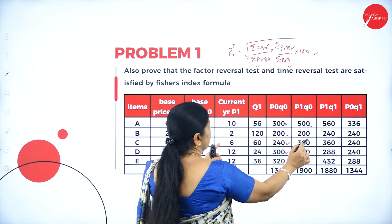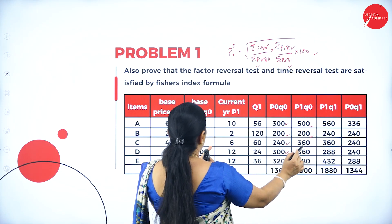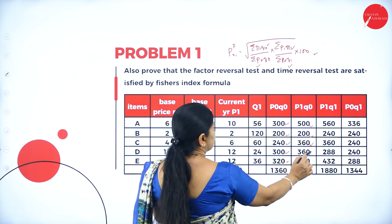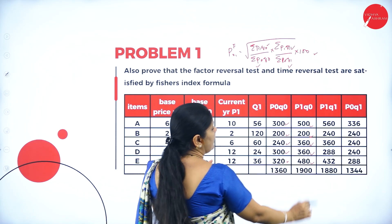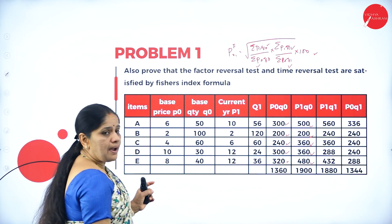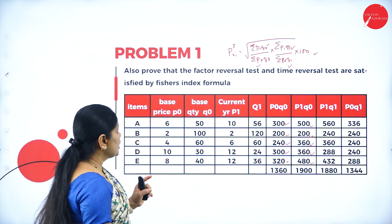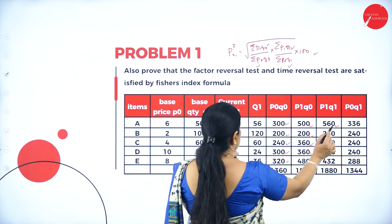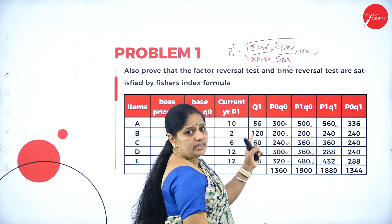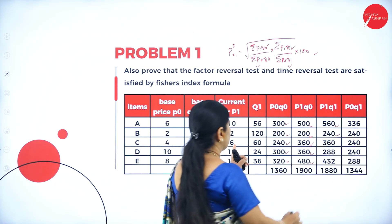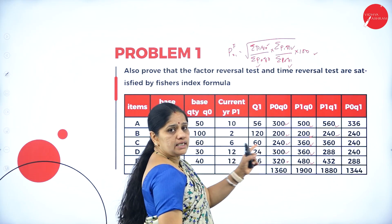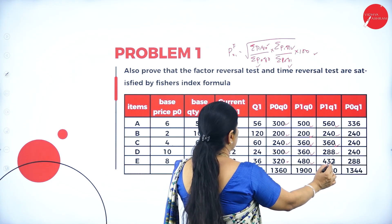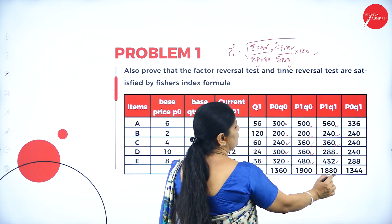Next, P1Q0: 10×50 = 500, 100×2 = 200, 6×60 = 360, 12×30 = 360, 12×40 = 480. Then P1Q1: 10×56 = 560, 2×120 = 240, 6×60 = 360, 12×24 = 288, and 432.